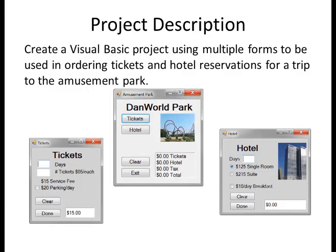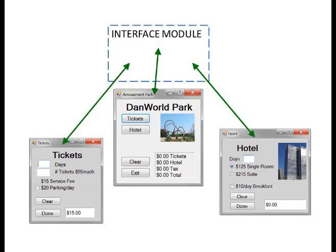Your job is to create a Visual Basic project using multiple forms to be used in ordering tickets and hotel reservations for a trip to the amusement park. When people press the tickets button, a new form will open up where the number of days and tickets can be entered. When the hotel button is pressed, someone can enter the number of days, select the room, and decide whether they want an optional breakfast. We will need an interface module so that we can pass data back and forth between these different forms.